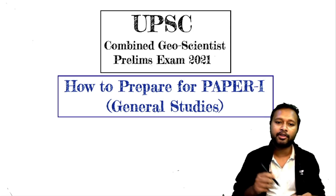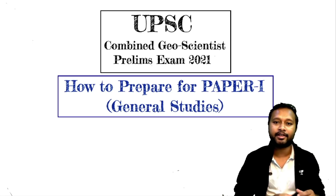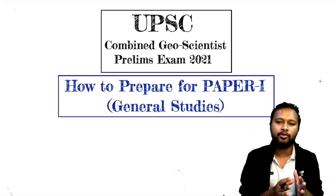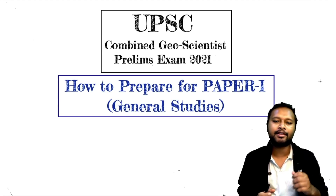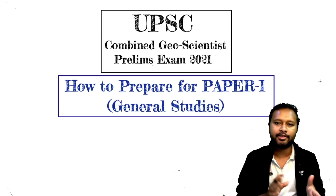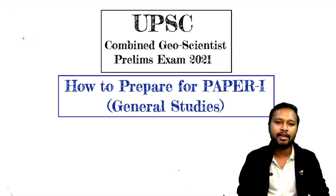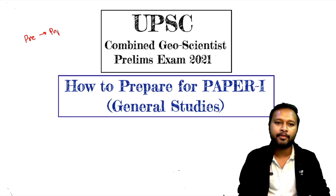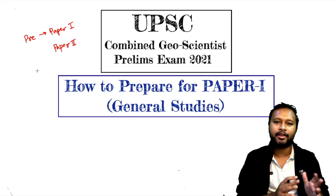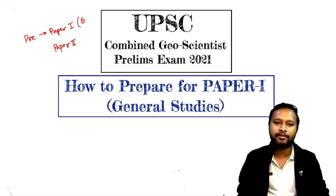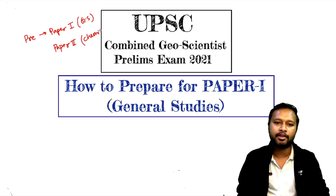Coming back to the topic — let's talk about how to prepare for the general studies part of the UPSC exam. Before getting into preparation strategy, let's understand what is actually in the GS part. Your prelims exam is divided into two papers: Paper 1 and Paper 2. Paper 1 covers the syllabus for the general studies part, and Paper 2 is topic-specific — in this case, chemistry.